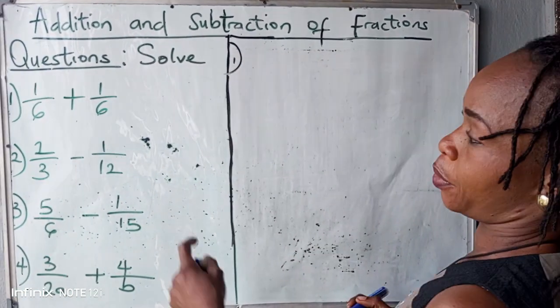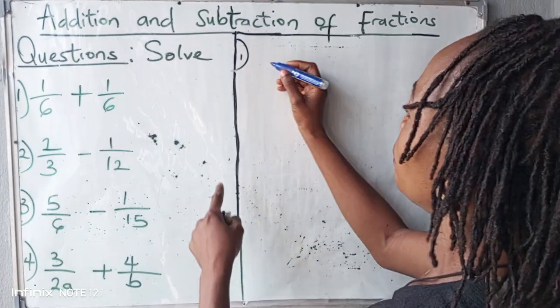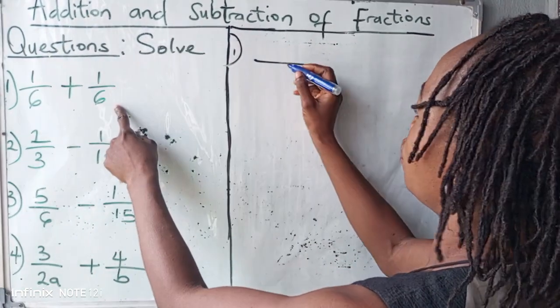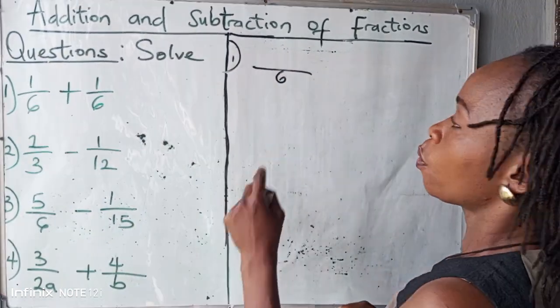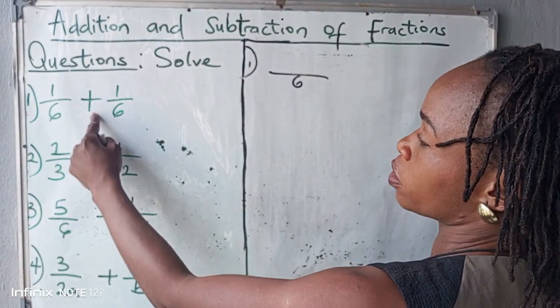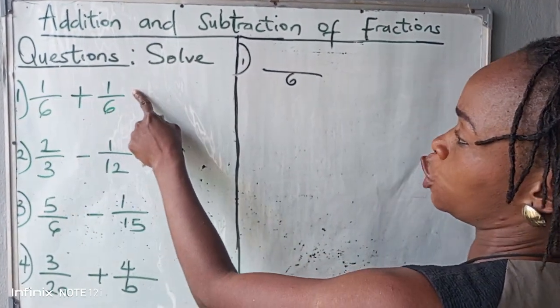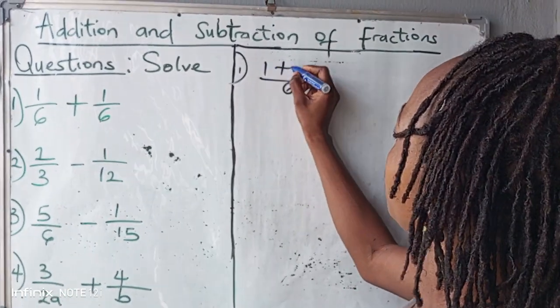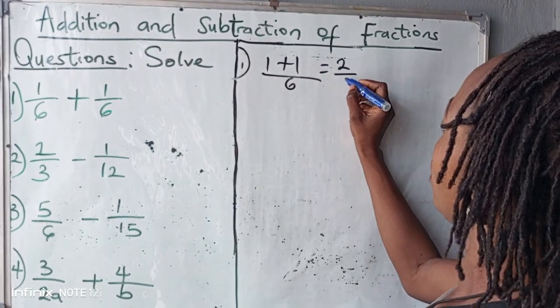The first one, here we have same denominator, so we pick one, six and six, so we pick one. When we pick one, we have plus, so what we do is to add up the numerators, so we have one plus one to give us two all over six.